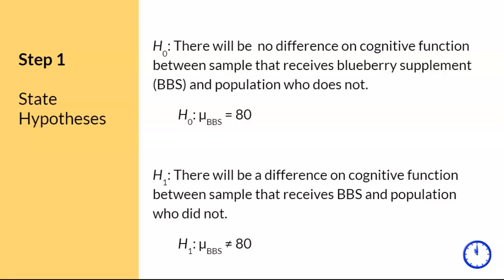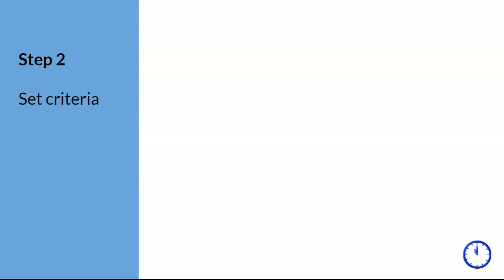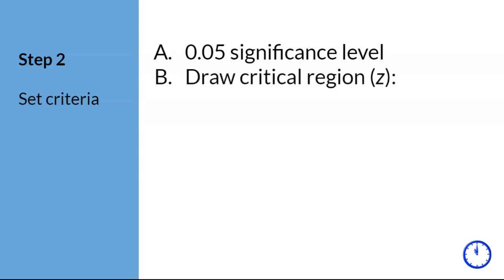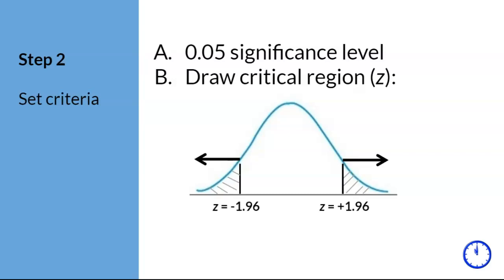Step 2. As the researcher, we get to decide the significance level, and the preferred one is .05 significance level. Since we don't know if the blueberry supplement is going to increase or decrease cognitive functioning, we need to draw a critical region z for both tails above and below the mean. The corresponding z-scores for a .05 significance level is two-tailed z equals plus or minus 1.96. The box indicates the final answer that I would be looking for on a problem set and exam.